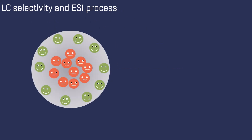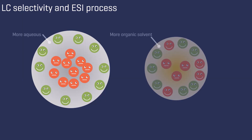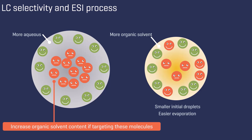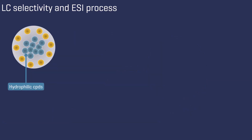The likelihood of detecting specific molecules and their tendency to loss is influenced by their location within the electrospray droplets. This effect is especially pronounced when the droplets are primarily aqueous, because the initial size of droplets containing more organic solvent is smaller and evaporates more readily. If targeting molecules that are located at the center of aqueous droplets, it is therefore advisable to increase the organic solvent content. As described before, these are molecules that are more hydrophilic.